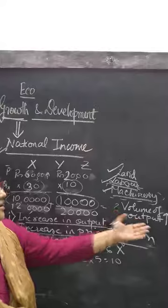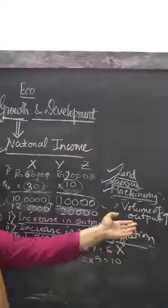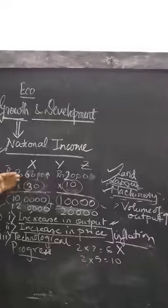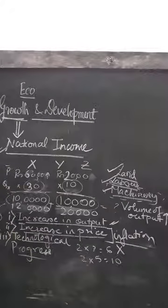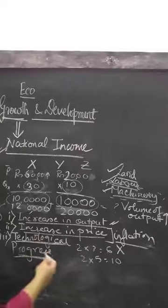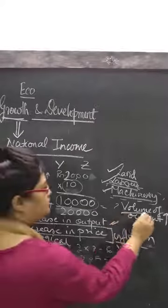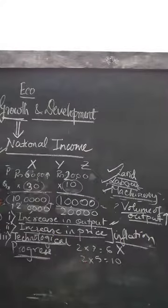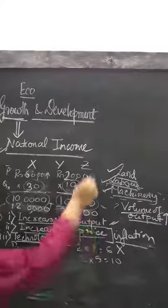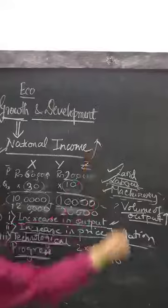If the country can increase its volume of production, then even with the existing price — without any price change — the country can get a higher income. Any kind of technological progress that helps in increasing the volume of output is beneficial. When volume of output increases, expected national income also increases with it.